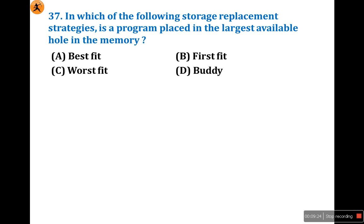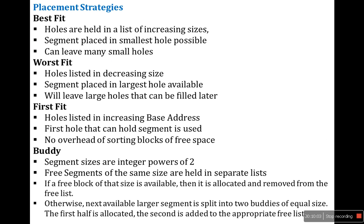In which of the following storage placement strategies is a program placed in the largest available hole in memory? Based on memory holes, there are four types: first fit, best fit, worst fit, and buddy. This question may ask about the largest available hole or sometimes the smallest available hole. In best fit, holes are held in a list of increasing order, and the segment is placed in the smallest hole possible — this can leave many small holes.